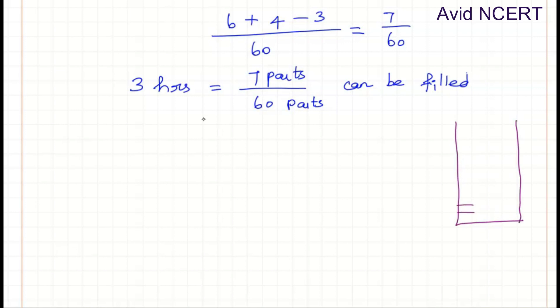If this is a tank with 60 parts, 3 hours is taken to fill 7 parts. The closest multiple to 60 is 56 parts. 7 times 8 is 56. So 56 parts of the tank out of 60 parts can be filled in 8 cycles because 7 times 8 is 56, which is closest to 60.